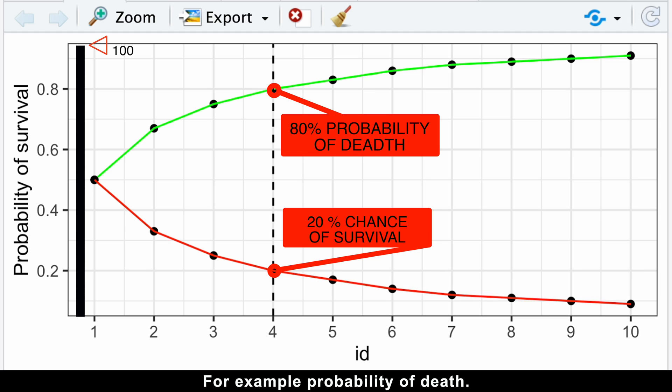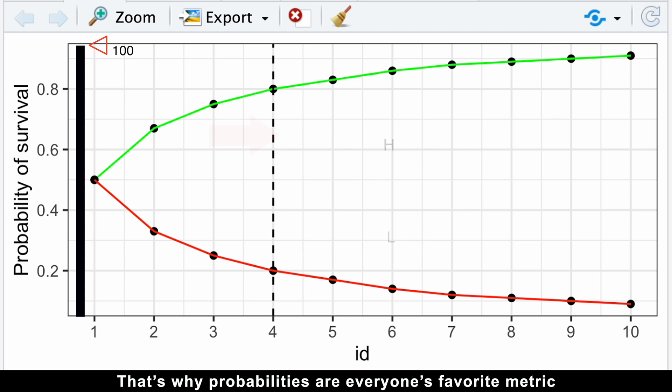For example, probability of death. In our example, 100% minus 20% chance of survival equals 80% chance of death. That's why probabilities are everyone's favorite metric for interpreting logistic regression.